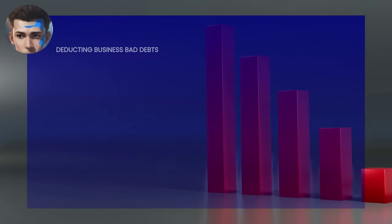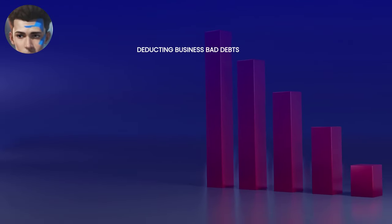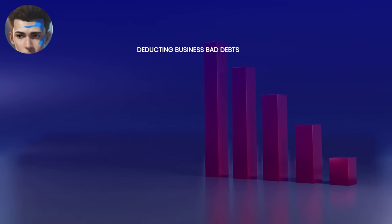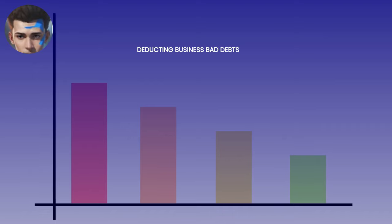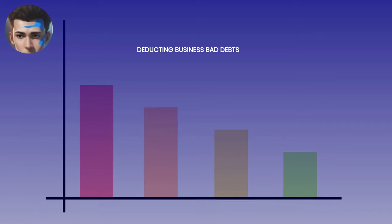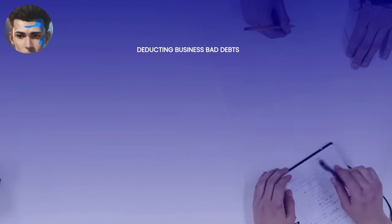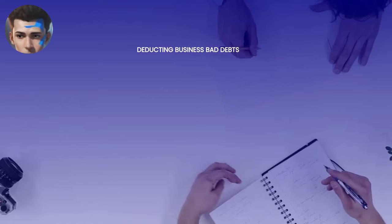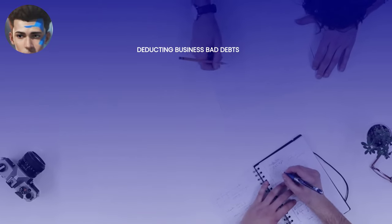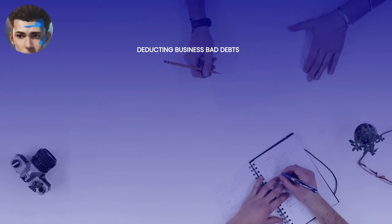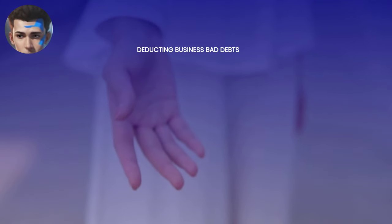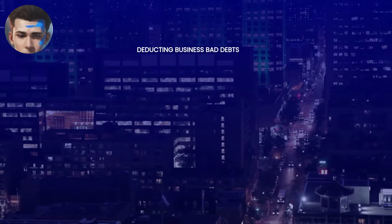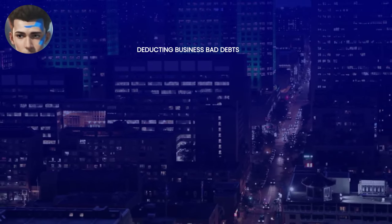Business bad debts can be either partially worthless — meaning you cannot collect on a part of the debt — or wholly worthless, meaning that you cannot collect any of the debt. A debt is closely related to your trade or business if the debt is business-related. You can deduct it on Schedule C, Form 1040, Profit or Loss from Business, Sole Proprietorship, personal and/or private business, or under applicable business income tax return.